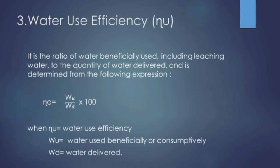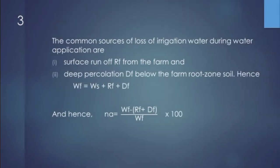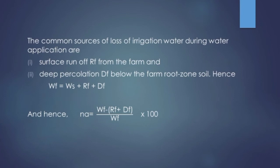The third is water use efficiency. From the water delivered to the farm, how much is used beneficially or consumptively? It is WU divided by WD — beneficial or consumptive water use divided by water delivered. The effective water used consumptively (WF) is found by subtracting losses — runoff (RF) and deep percolation (DF) — from water delivered to the farm.